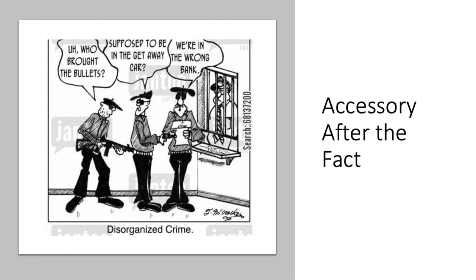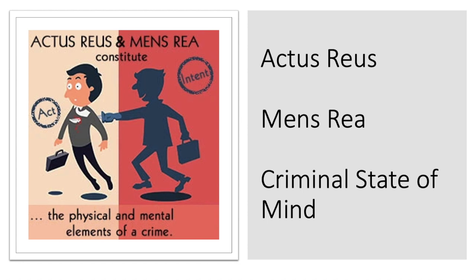For the last three elements of a crime, I'll be combining them. Actus reus is commonly defined as a criminal act that was the result of voluntary bodily movement. This describes a physical activity that harms another person or damages property — anything from a physical assault or murder to the destruction of public property would qualify as actus reus. Mens rea refers to criminal intent — the state of mind statutorily required in order to convict a particular defendant of a particular crime. A criminal conviction generally requires that the defendant act with a guilty mind, intentionally, in order to be guilty.